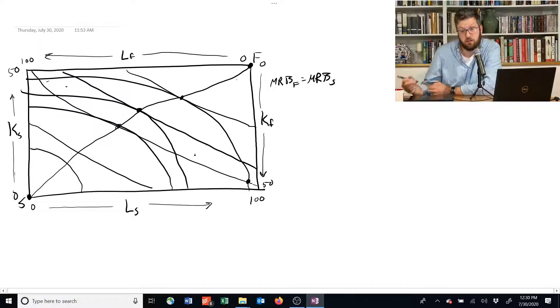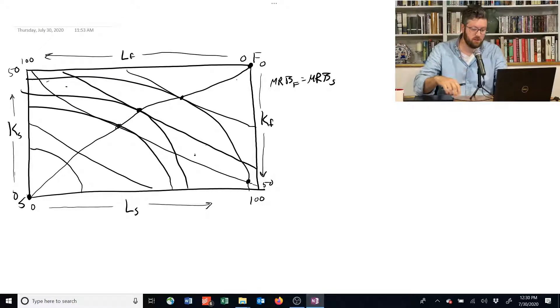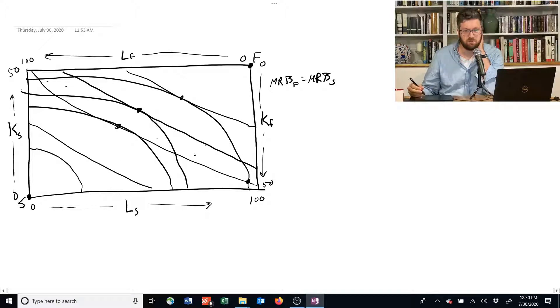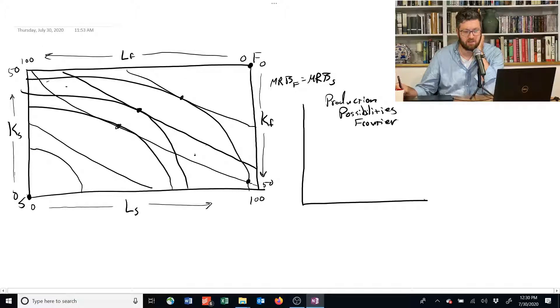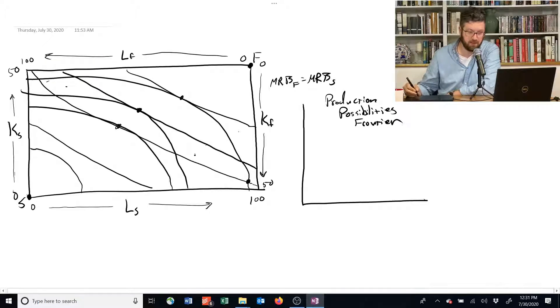That line is called the production contract curve, but you don't really need to know that in this course. Instead, what I want to do is use this information to sketch out another graph that's useful called the production possibilities frontier. This is the production possibilities frontier. It's a graph that instead of having as its axes capital and labor, it has the different types of goods that the economy produces. In this example economy, there's shelter and food.